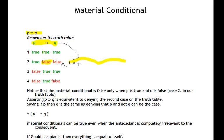The material conditional then can be true even when the antecedent is completely irrelevant to the consequent. This is also puzzling, right? Why would it be that the antecedent has no connection to the consequent and yet the conditional is true?